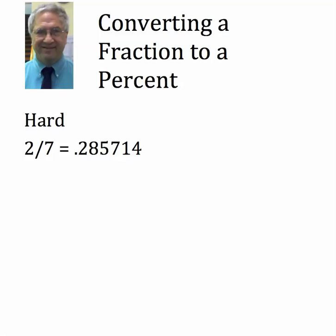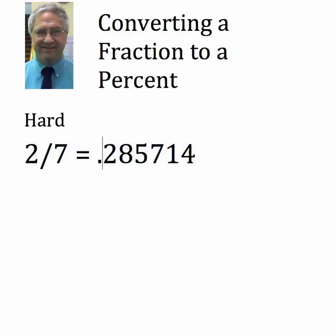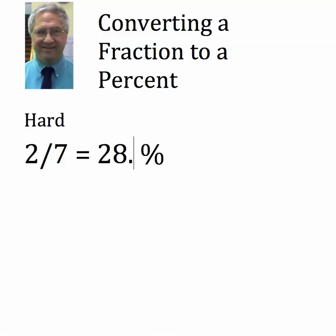Once you know the decimal equal to two-sevenths, here's what you do: you take the decimal point and move it two places to the right to change it from a decimal to a percent. When you move it two to the right, it becomes 28.57%. Nobody writes it as that ugly a number — they'd just write it as 28.57, or maybe round it off to 28.6. The whole point is picking up the decimal point and moving it two to the right.